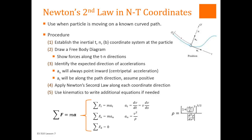We're going to establish an inertial reference frame. In NT, we establish a normal-tangential reference frame. We draw our free body diagram showing all forces in the NT directions, breaking up any force that isn't in the NT direction into components along n or t. We identify the expected directions of our accelerations: a_n always points inward towards the center of curvature for the path, and a_t always points in the path direction. Then we apply Newton's second law and use kinematics again.